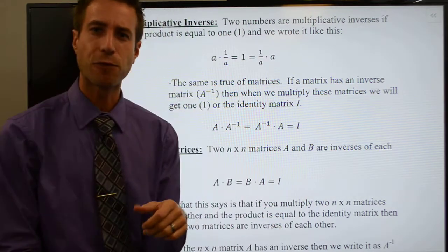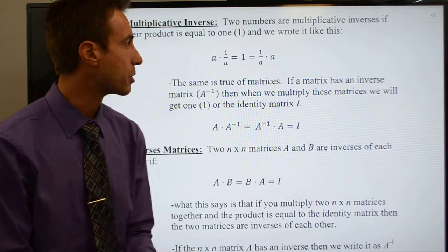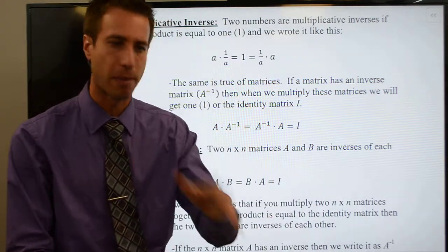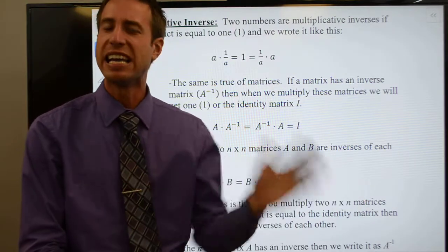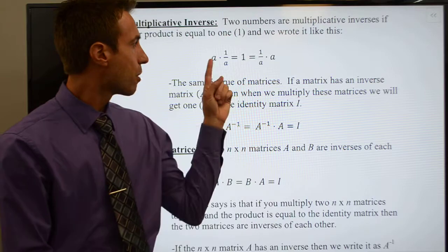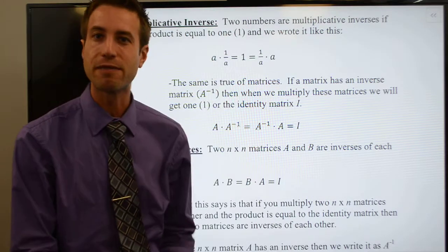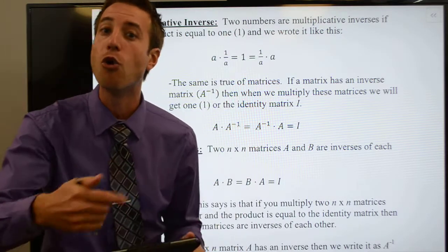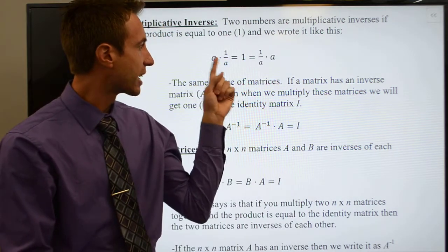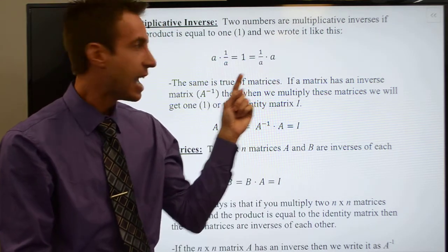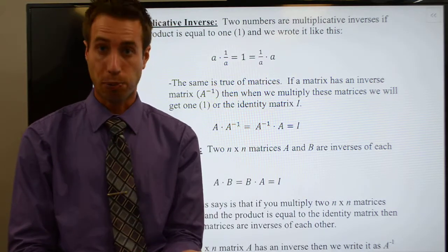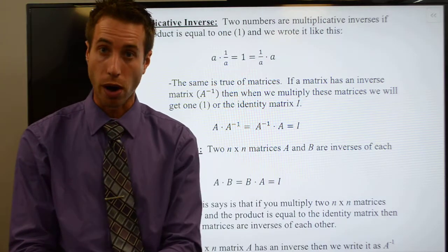Here's what we said for the inverse property of real numbers. If you take any real number A — it can be any real number: positive, negative, rational, irrational, whatever — pick any real number you want. If you multiply that number by its inverse, which means you just put one over that number, those guys are going to cancel with each other, and you're going to be left with one. So any number multiplied by its inverse, the product is equal to one.